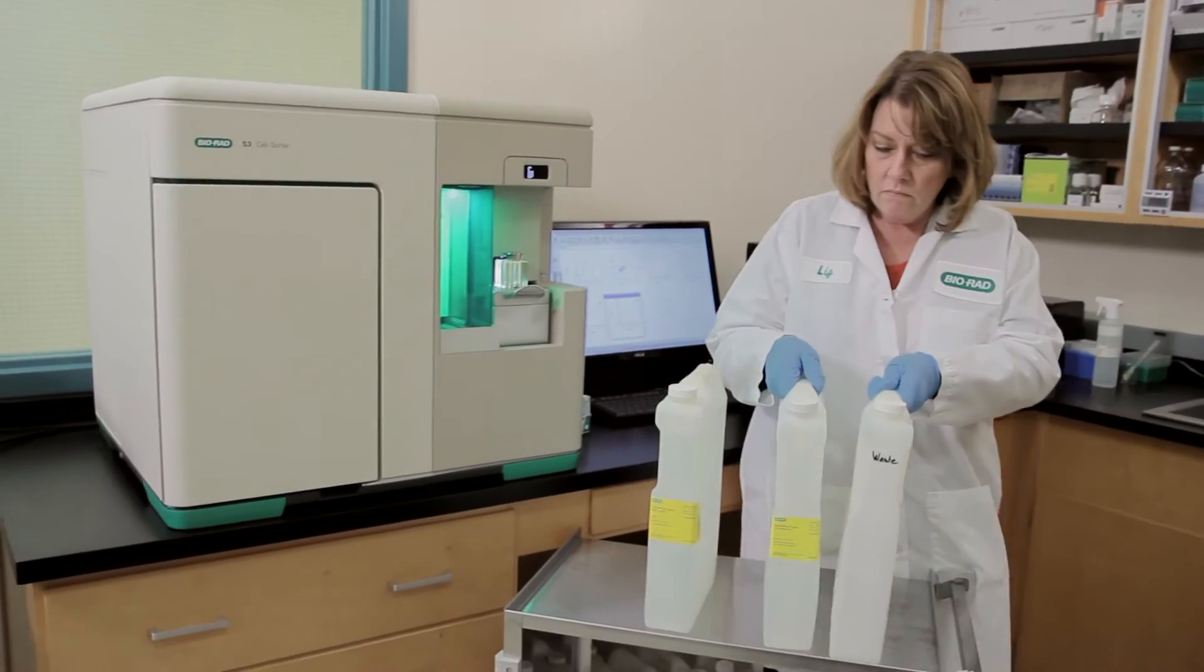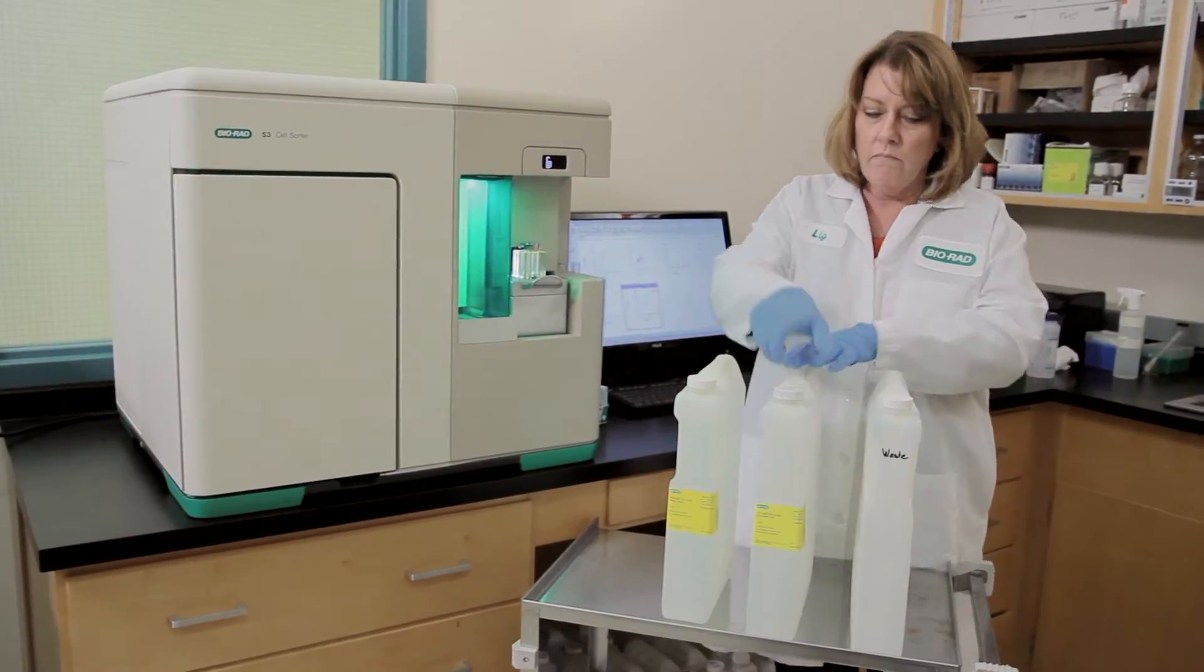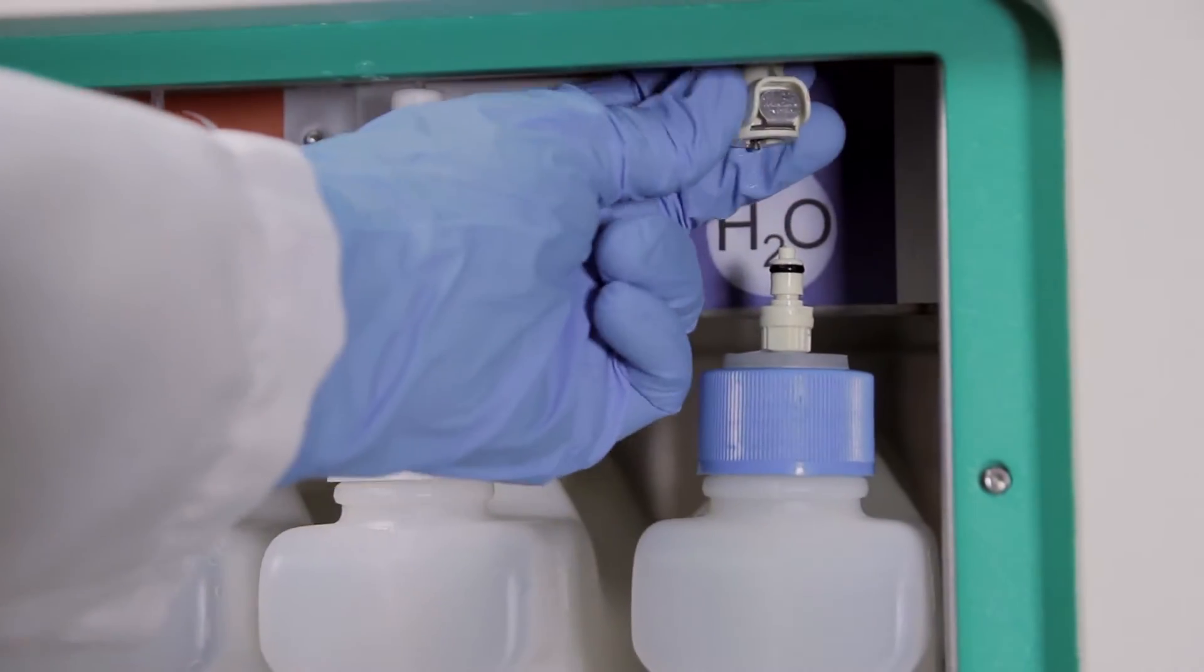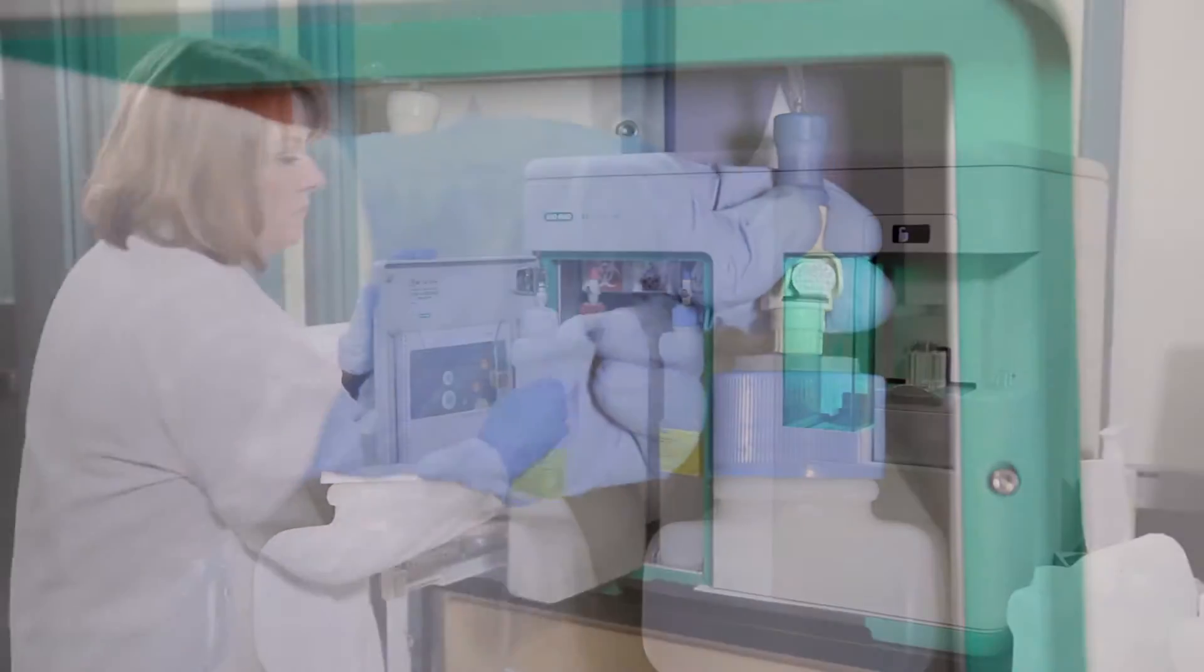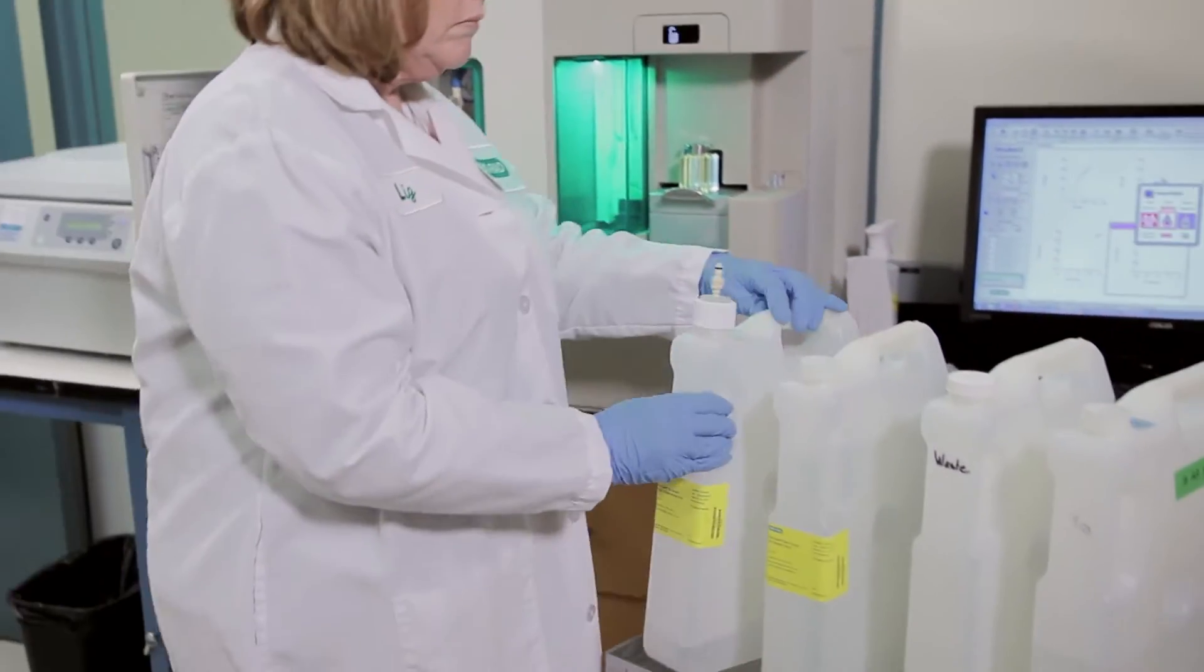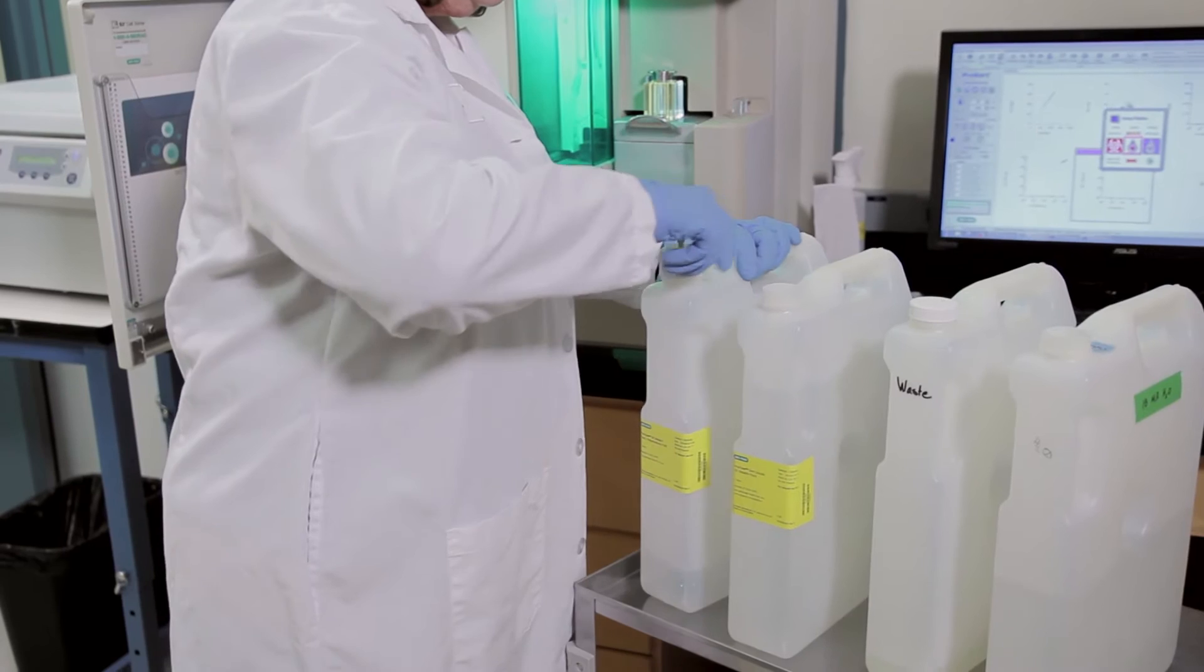A hot swap on the S3E cell sorter allows you to exchange fluidics bottles without needing to shut down the instrument and can be done with the DI water, sheath and waste bottles. A hot swap is possible because the S3E cell sorter contains an internal sheath reservoir which maintains the system pressure while the fluid bottles are being exchanged.